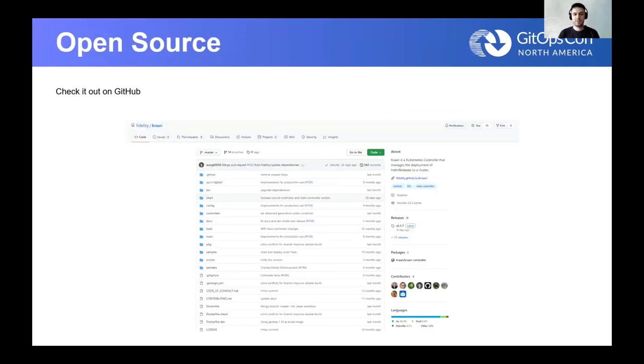Now last but not least, I'd like to mention that CRON is an open source project. We'd be glad if you check it out on GitHub at github.com/fidelity/cron. That's where you can find all the resources, the source codes of the CRON controller and also a Helm chart that can help you deploy CRON, the source controller and the Helm controller so you can start building layered platforms as well.